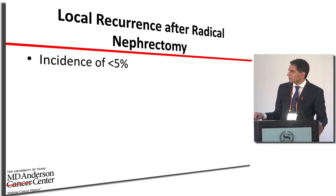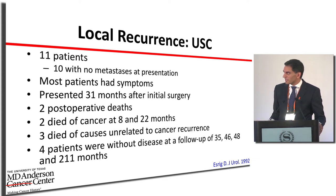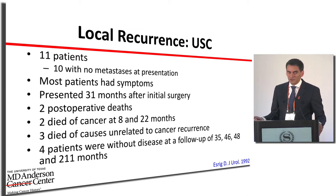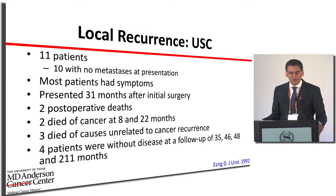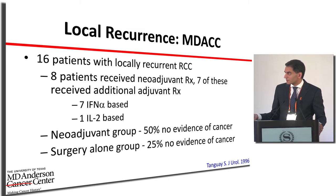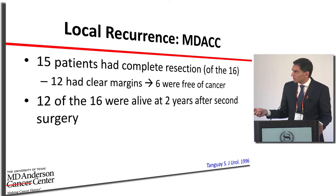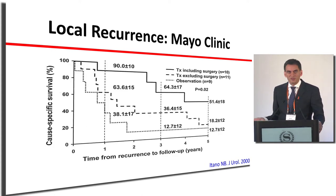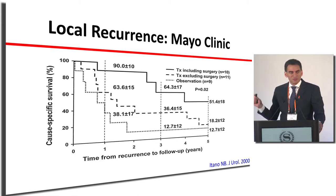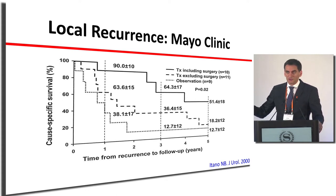Earlier studies from California with 11 patients showed two post-operative deaths and two patients who died of cancer within two years — but we've made significant progress since then. Another study of 16 patients showed 15 had complete resection, with 6 actually free of cancer without additional therapy. Mayo Clinic data shows that patients who have surgery for local recurrence do better than those who don't, though careful patient selection is critical.